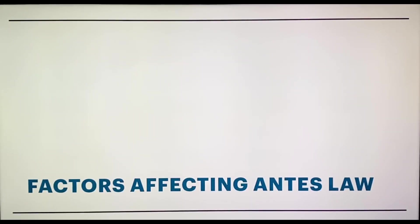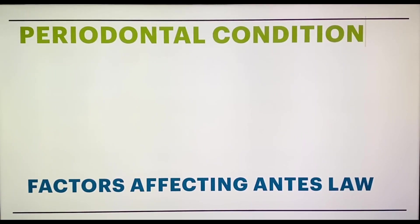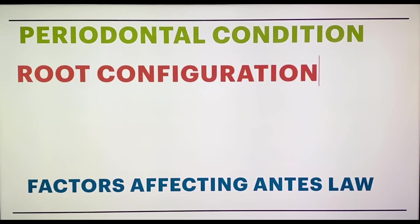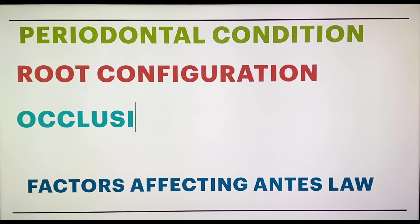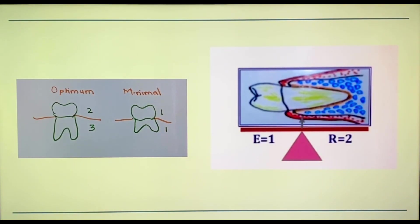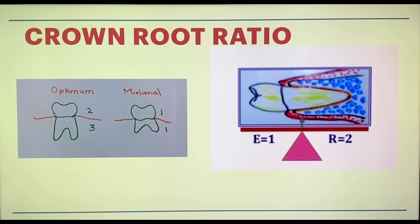There are factors which affect Ante's law. If the periodontal condition of the roots is not good and there is bone loss, we should take extra support. When the root configuration is not proper or when we have a separated root, we should also take additional support. Improper occlusion is another factor. One more condition that affects Ante's law is the crown-root ratio.